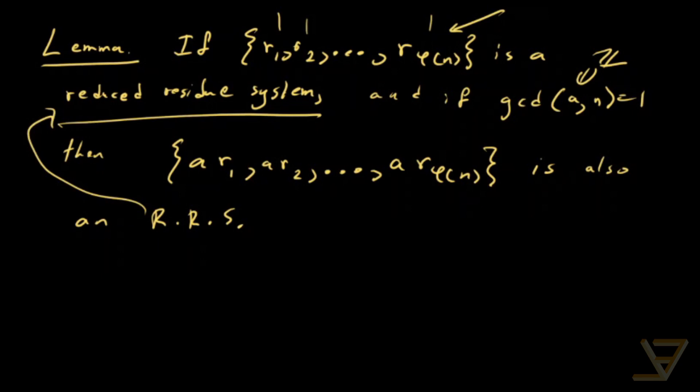then that is also a reduced residue system. So in essence, if we multiply this by a, it just permutes it. This is not hard to prove. I'll leave this proof to you.